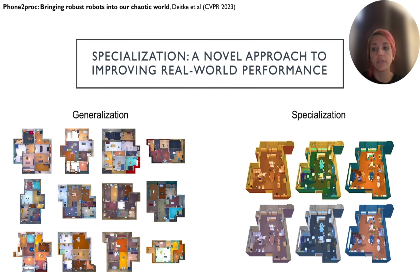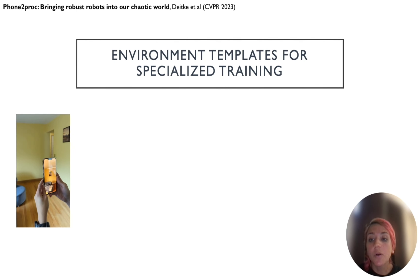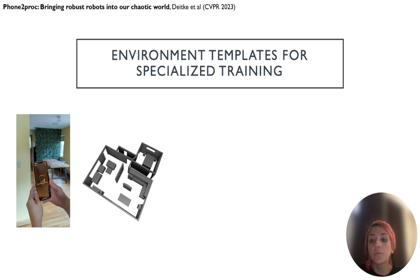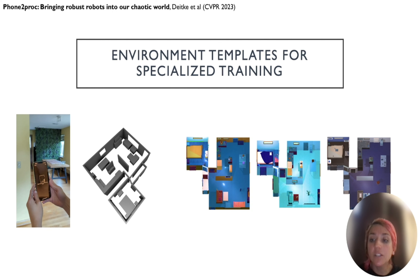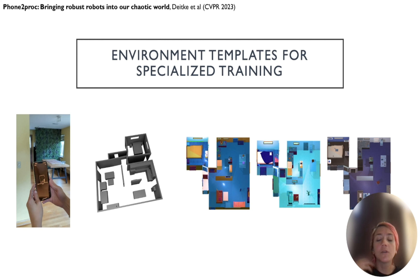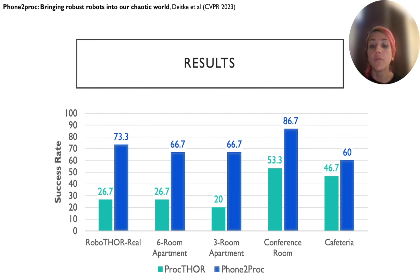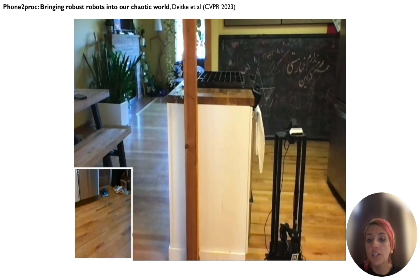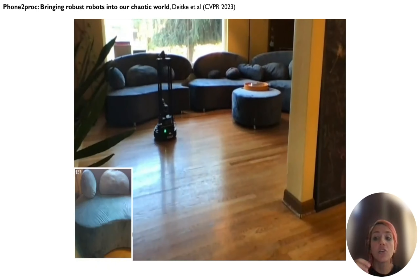We propose a paradigm shift: rather than pushing for universally generalized agents, we should aim to specialize them for their target domain, equipping them with a high-level 3D understanding of their respective environment. We devise an approach that effectively uses smartphone scans of a target environment to produce a template 3D layout of that scene. Leveraging this layout, we procedurally generate variations of the environment that we can train our models on, leading to a notable performance improvement in real world applications. Phone2Prox significantly improves performance across a variety of testing environments, notably in complex multi-room layouts. A demonstration shows our agent, trained only in a simulated environment, successfully and efficiently navigating to a sofa.